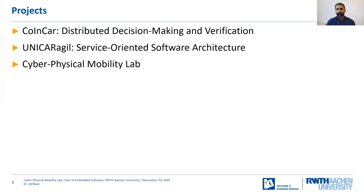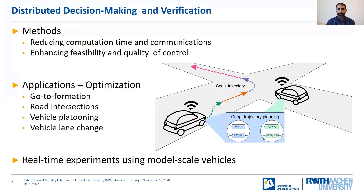The Cyber-Physical Mobility Lab itself is a group-wide project that makes our research results tangible and visualizes them, both for the scientific staff as well as for students. Before going into details about the lab, I would like to motivate it using the project Distributed Decision Making and Verification. In this project, we developed methods for reducing computation time and communications for networked trajectory planning, while at the same time enhancing feasibility and quality of control. The optimization-based applications we consider are go-to formation and route intersections, which I will present in the next slides.